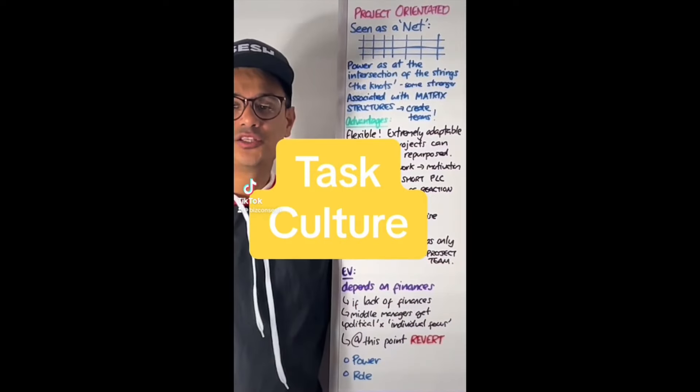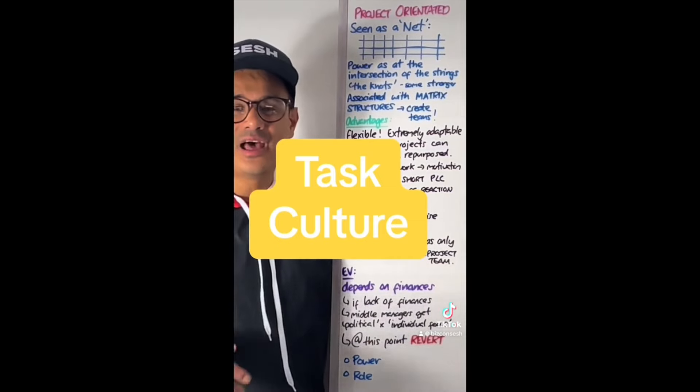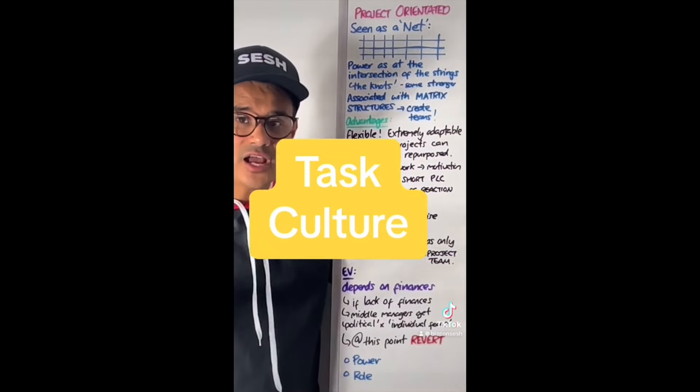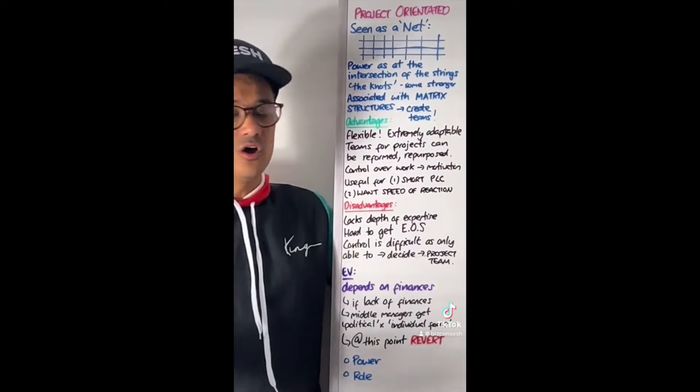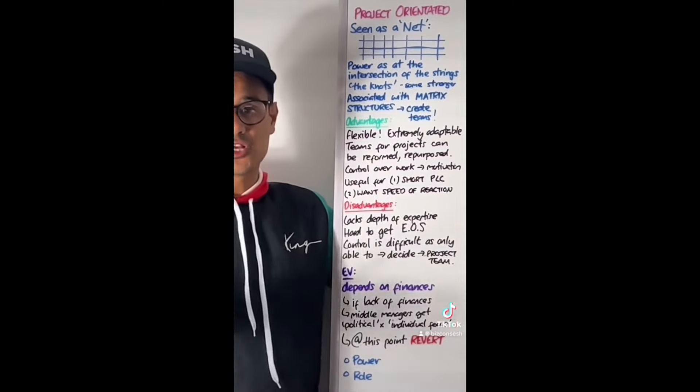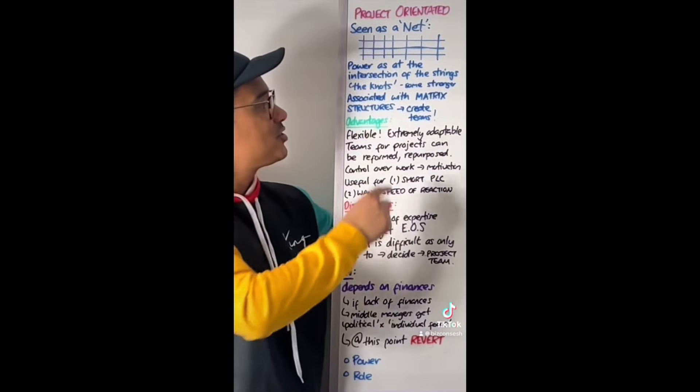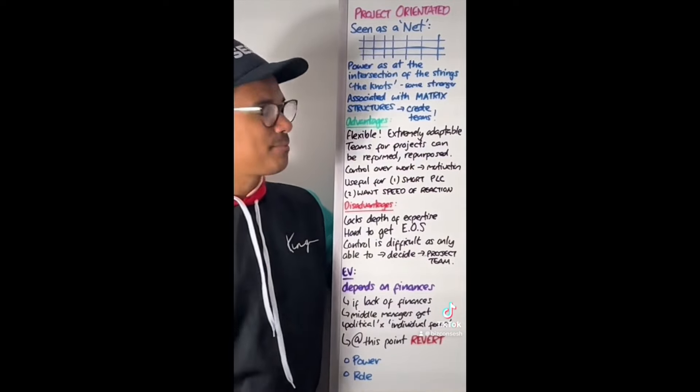Task culture is very much project orientated. Handy saw it as a net because it's associated with matrix structures. The power here is at the intersection of the strings that divide up the business, the knots as he called them. Some of these strings are stronger than others because some individuals are better than others. You're creating that team environment, it's project-based.